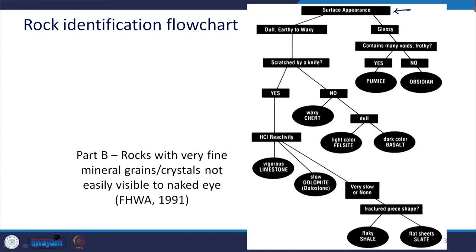Whether the surface is dull, earthy or waxy, or if it is glassy, we follow different directions. If it is dull, earthy or waxy, the next step is to check whether it is scratched by a knife or not. If it is scratched by a knife, check whether it is reactive to acid. If it has vigorous reaction, the rock is limestone. If the reaction is slow, then you have dolomite or dolostone.